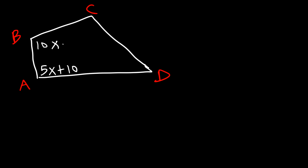Now let's work on another example. Let's call this angle A, B, C, and D. So angle A is equal to 5x plus 10. Angle B is 10x minus 30. Angle C is 95 degrees. And angle D is 4x. Go ahead and find the measure of angle A. Feel free to pause the video and work on this example.